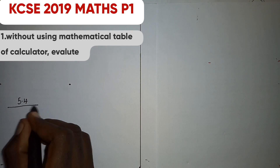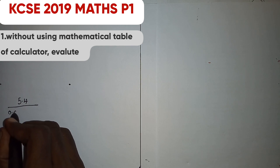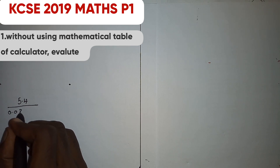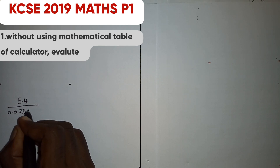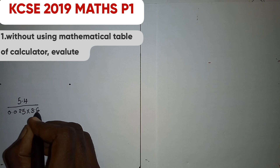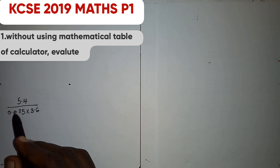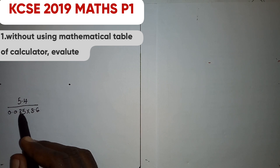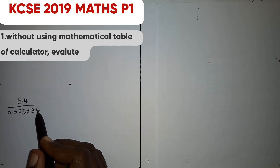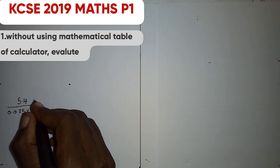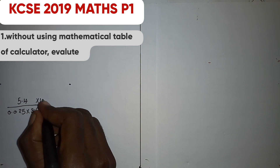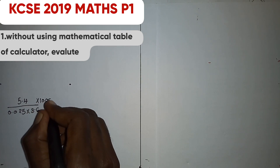Let us count the number of decimal places in the denominator: one, two, three, four. Therefore, to remove the decimal places we are supposed to multiply both numerator and denominator by 10,000.